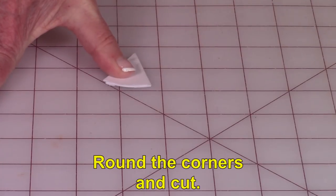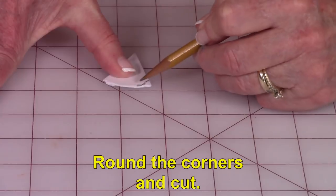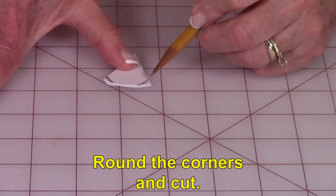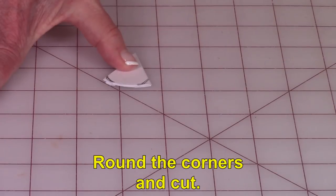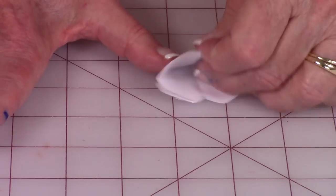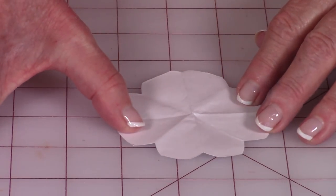Then just take a pencil and kind of curve these corners here a little bit, just a little bit. And then cut these little corners off with a pair of scissors. And then unfold it. And there you have your flower.